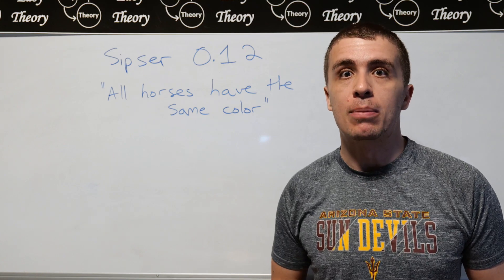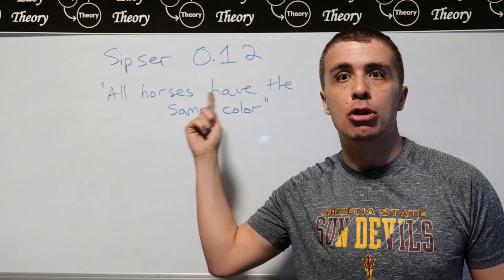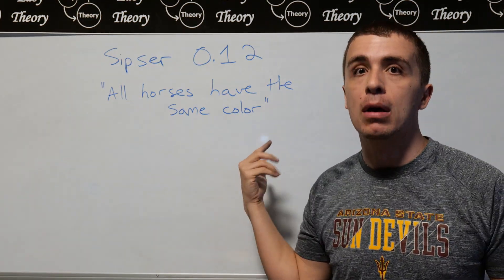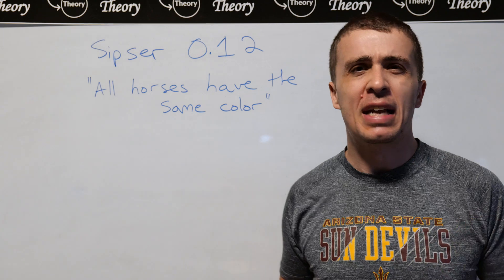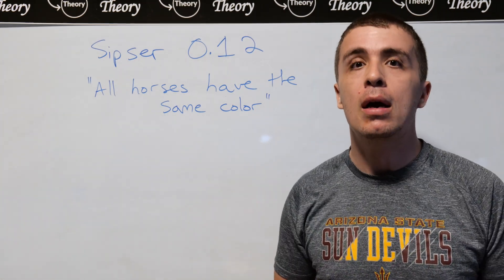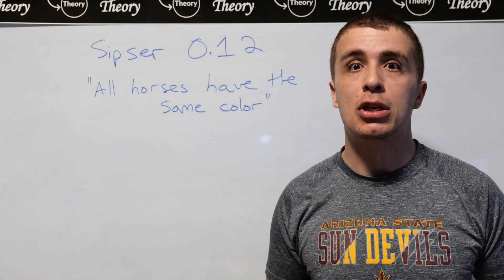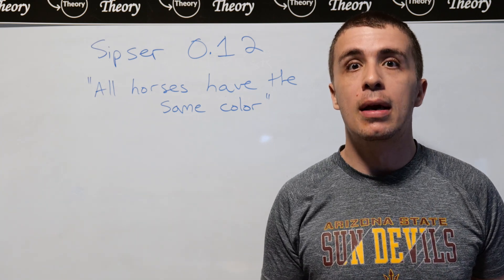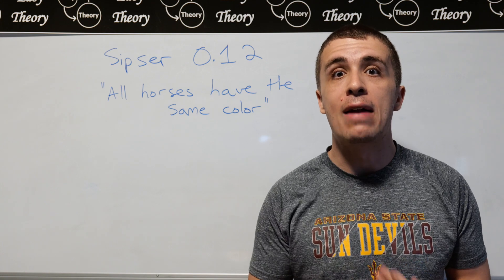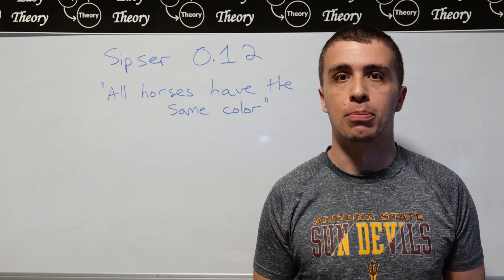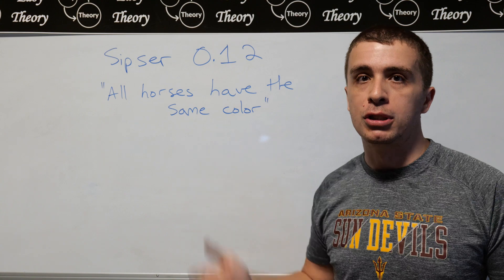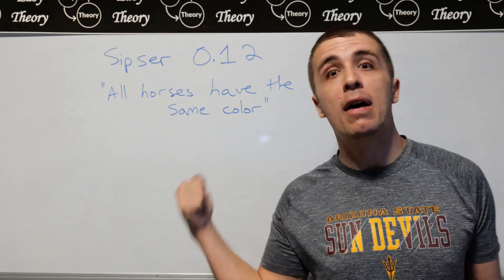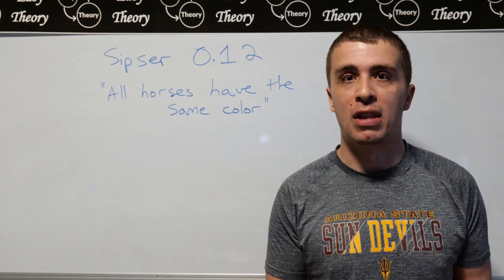I wanted to talk about a really interesting problem, which happens to be Sipser 0.12, which asserts that all horses have the same color. It doesn't have to be horses, it doesn't have to be color, but it's a very important problem because it talks about how to prove things via induction and to be sure that you can justify every statement made in such a proof. Clearly this thing is false, but the idea is to look at a potential proof of this statement and try to find where it falls flat.